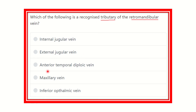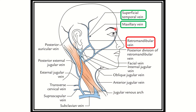Here the options: the options are internal jugular vein, external jugular vein, anterior temporal diploic vein, maxillary vein, and inferior ophthalmic vein. So we have to find out which vein is the tributary of the retromandibular vein.